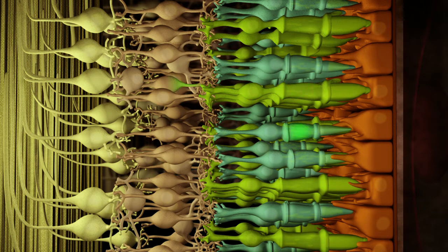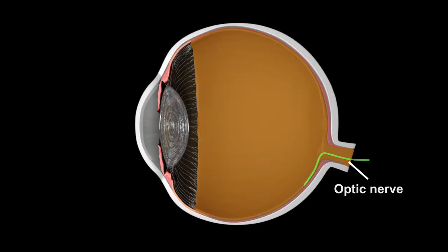The signal is passed through the retina's layers of neurons and carried to the optic nerve located at the back of the eye, where the signal is gathered and sent to the brain.